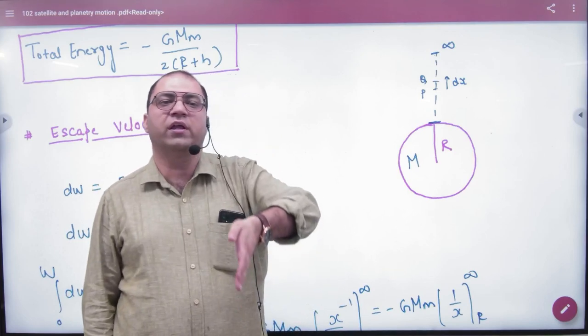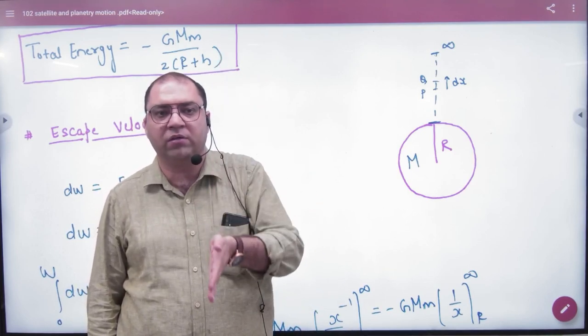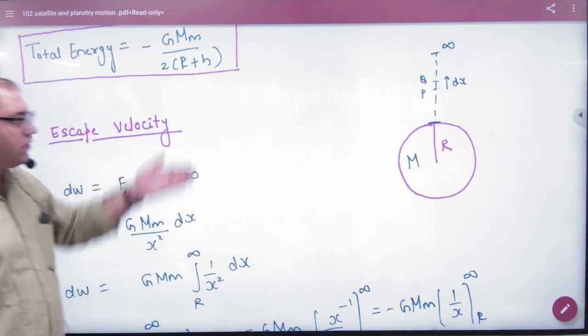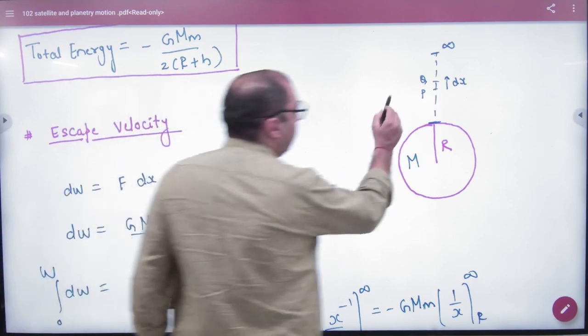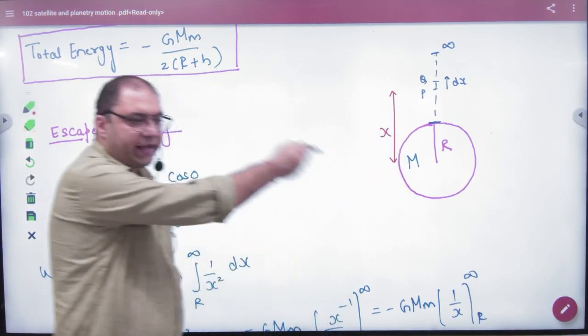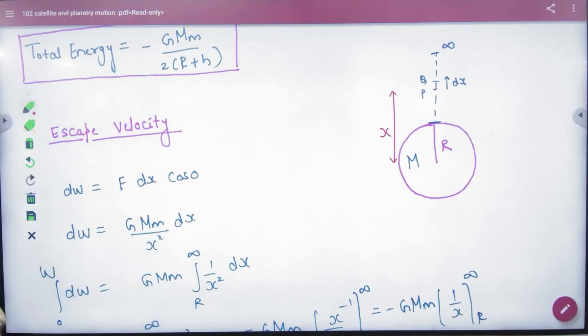Work done, there will be a variable force. As far as the force will increase, the force will decrease. We take a small displacement in variable force. So, let's assume the distance of the p-point is x. Make it in the diagram. The distance of the p-point is missing. It's x. So, the distance of the center of the p-point is x.